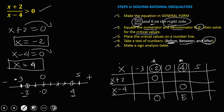For the test numbers: if x equals negative 3, then negative 3 plus 2 is negative 1, and negative 3 minus 4 is negative 7. Just write the sign — negative divided by negative gives positive. Then if x equals 0, so 0 plus 2 is positive 2, and 0 minus 4 is negative 4. Positive divided by negative gives negative.